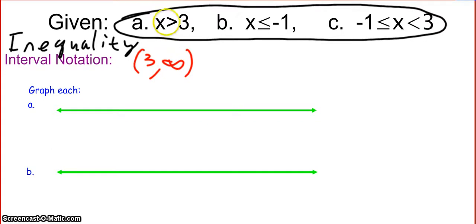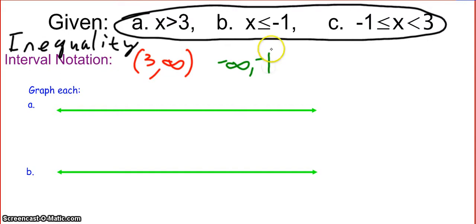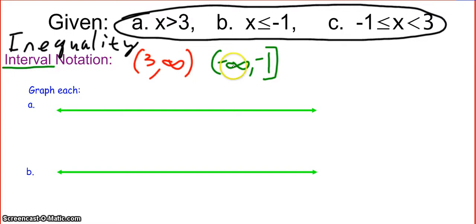That would be the interval notation for x is greater than 3. What about x is less than or equal to negative 1? The interval notation for this — since negative 1 is the largest possible value that x can be, it goes on the right-hand side, and we include every value to the left. So that's going to be negative infinity, comma, negative 1. We use a parenthesis with negative infinity and a bracket with negative 1, because the bracket tells us we are actually including negative 1 within our interval.